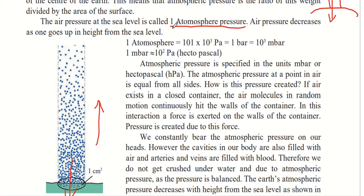Now let us study about atmospheric pressure in more detail. 1 Atmosphere is equal to 101 × 10³ Pascal, which is equal to 1 bar, which is equal to 10³ millibar. These are different units used to measure atmospheric pressure — Atmosphere, Pascal, Bar, or Millibar.